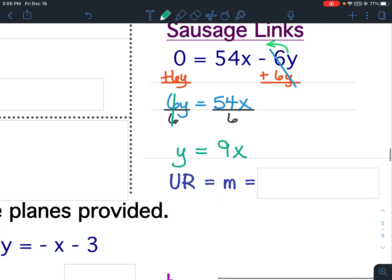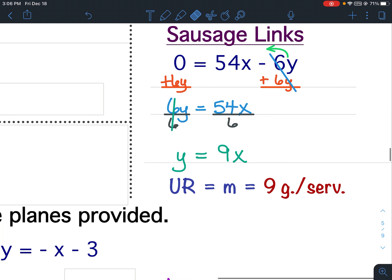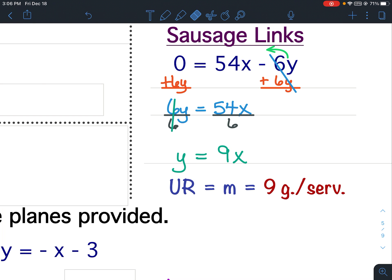Now that it is in slope-intercept form, your unit rate is the same as the slope, and slope is the coefficient of X. Therefore, my unit rate would be 9 grams of protein per serving. So sausage links has 9 grams of protein per serving.